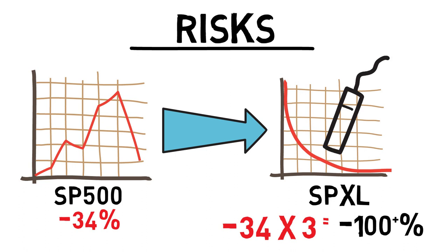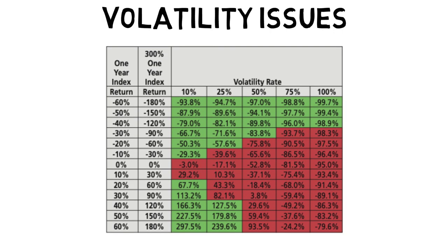On top of these extreme events, there are volatility issues. For instance, if the index's annualized volatility is 100%, the fund would be expected to lose 100% of its value even if the cumulative index return for the year was zero percent. That's right, even if the S&P 500 didn't lose money but experienced high volatility throughout the year, the fund would lose 100% of its value.